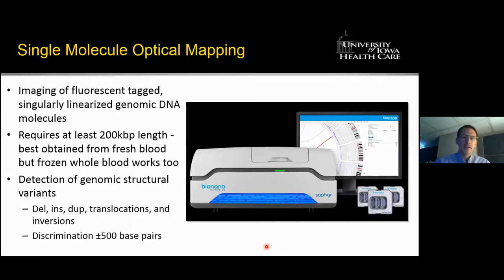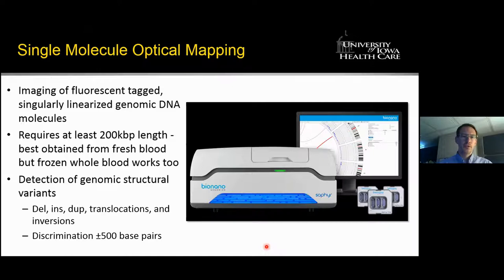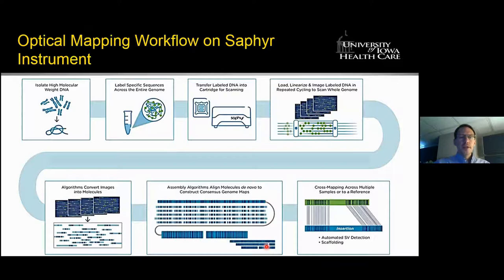We looked at single molecule optical mapping to see if we could improve on this. The idea is that you perform imaging of fluorescently tagged, singularly linearized genomic DNA molecules — very long molecules of at least 200,000 base pairs in length. This is best obtained from fresh blood, but frozen whole blood will also work. This approach is advantageous for determining genomic structural abnormalities including deletions, insertions, duplications, translocations, or inversions. BioNano has told us that discrimination has the ability of plus or minus 500 base pairs, which we found in our validation to be true.